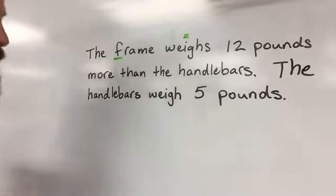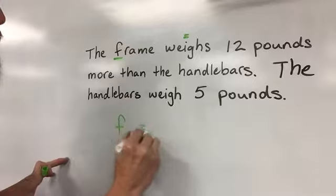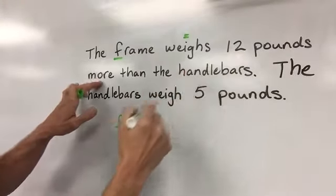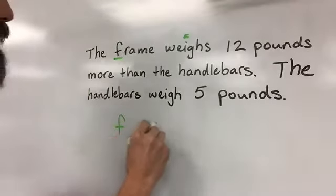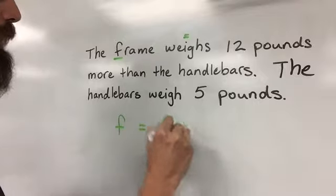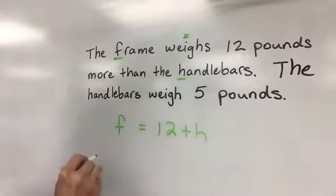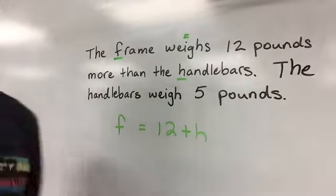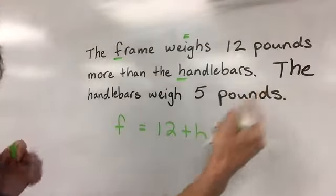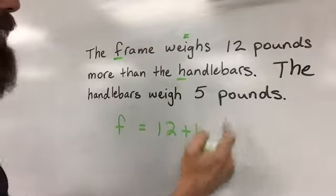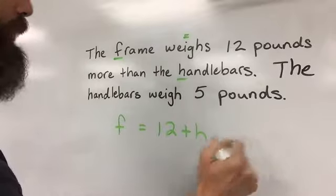So on your paper, it would look like this: F equals—over here it has 12 pounds more, 12 pounds more. So more would be 12 plus handlebars. We would use H. For the next sentence, the handlebars weigh five pounds. That is a second equation. It's a simple equation over here.